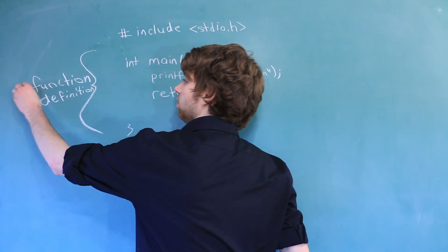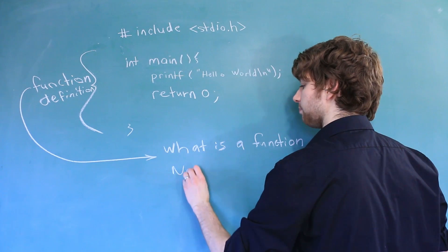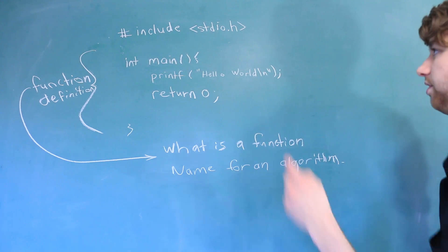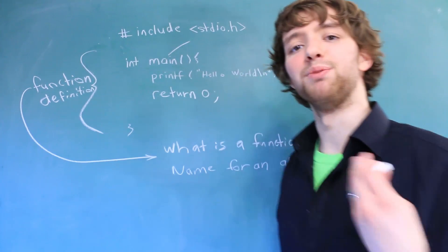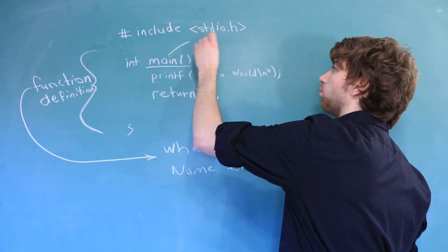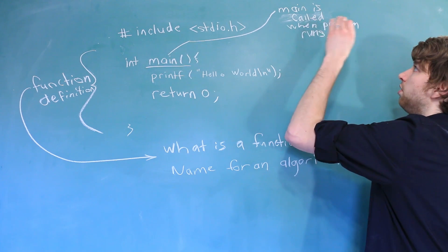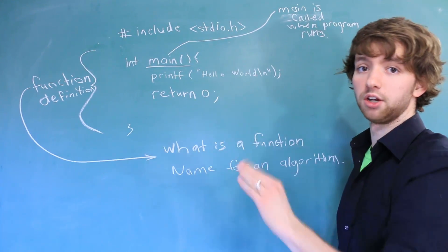So once again, as a reminder, what is a function? You can think of a function as just a name for an algorithm. Now the name main doesn't have a lot of meaning, but by convention, this is the function that is called when we first run our program. Main is called when the program runs. It's the first function that is executed in our program.